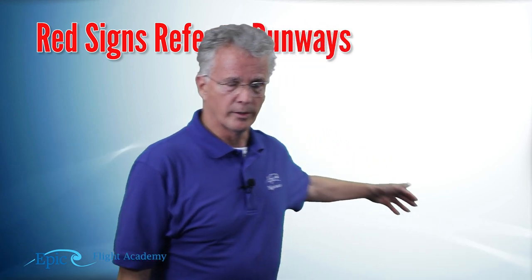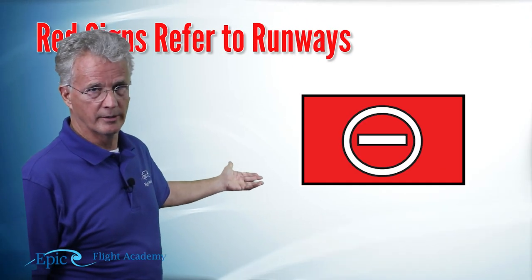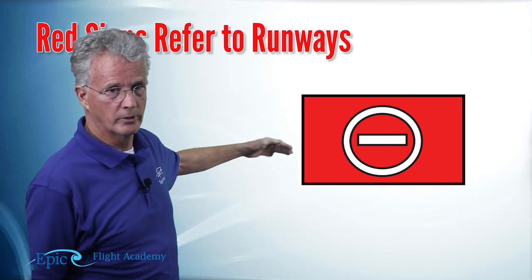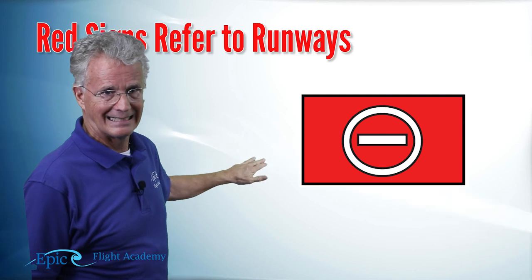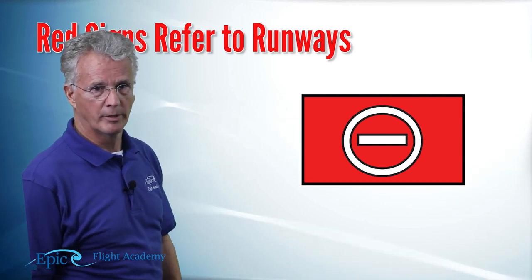Take a look at this one. Here's a no entry sign, a circle with a line through it, and it's red. This means you cannot enter the runway here. That's prohibited area. These are the red ones.